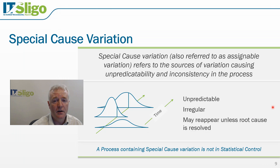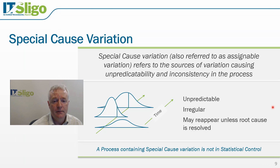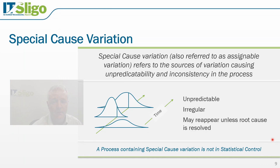A similar source of unpredictability arises in our drive to work. There may be an accident on the road and the road may be blocked, or we may encounter a puncture and have to fix it. The length of time it takes us to get to work in that situation will be irregular and unpredictable. A process that contains special cause variation is not in statistical control, in contrast to a process with common cause variation which is in statistical control.